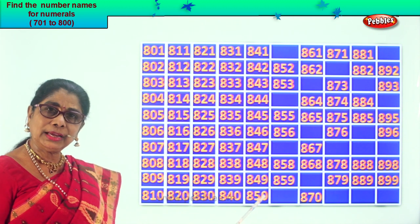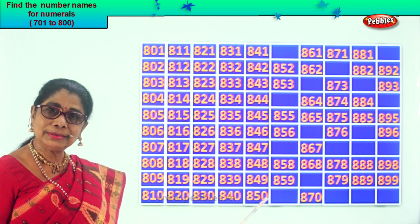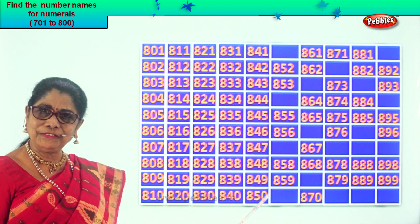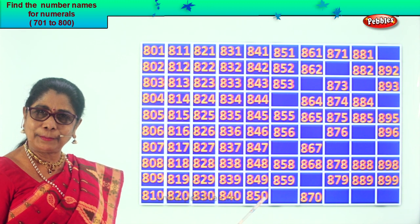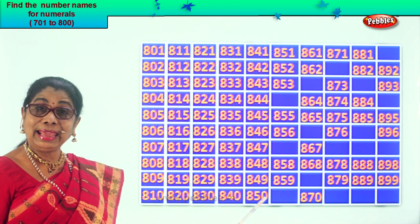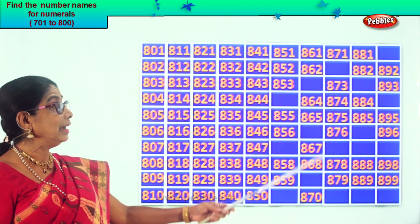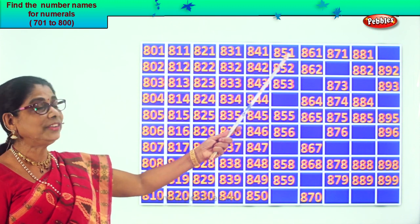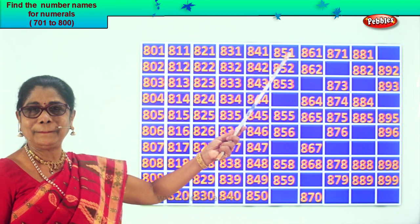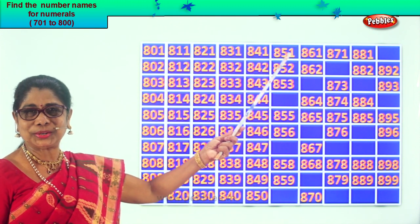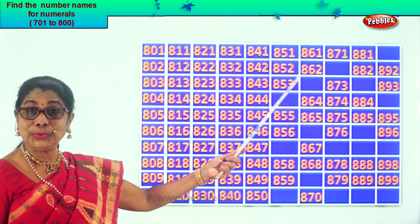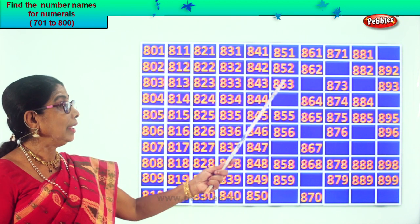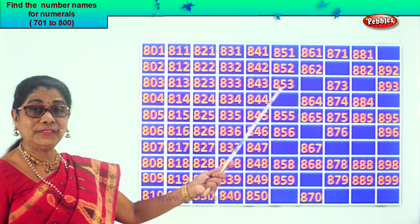After 50 comes 51. So we get the next missing number: 851. Good. Then 852, 853.